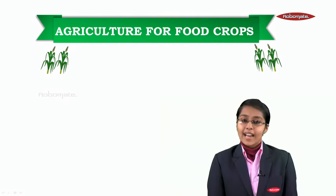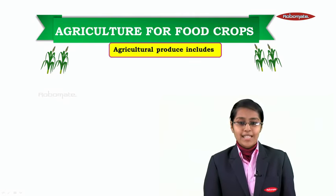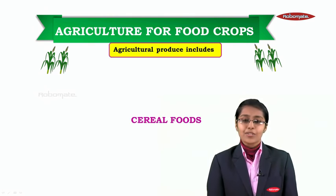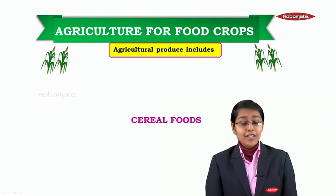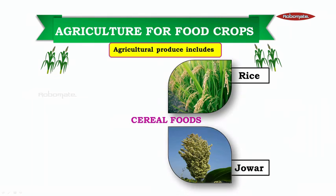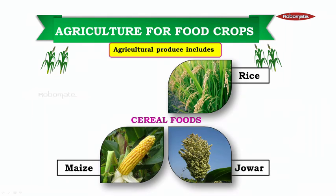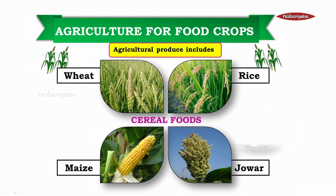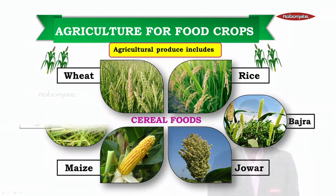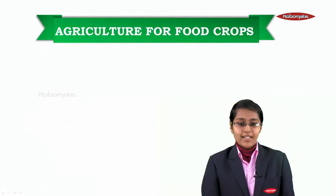Agriculture for food crops. Agricultural produce includes cereal foods. Cereal foods include rice, jowar, maize, wheat, bajra and ragi.